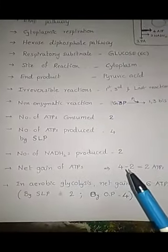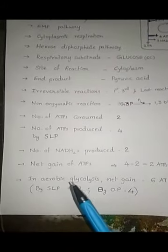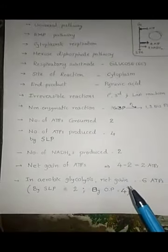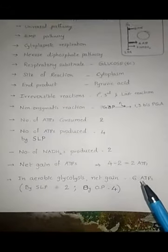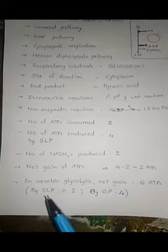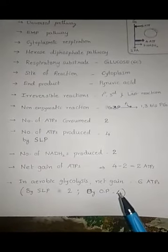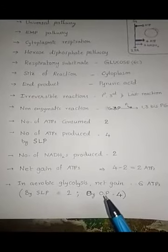The net gain of ATPs is 4 minus 2, which equals 2 ATPs. In aerobic glycolysis, the net gain of ATPs is 6. Of these 6 ATPs, 2 are produced by substrate level phosphorylation and 4 by oxidative phosphorylation.